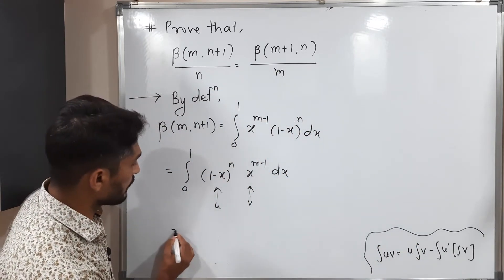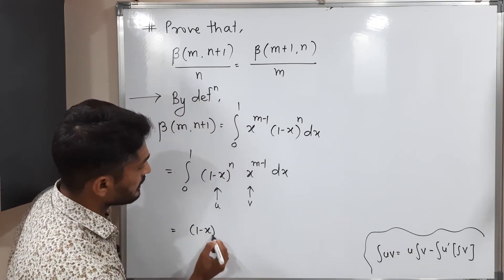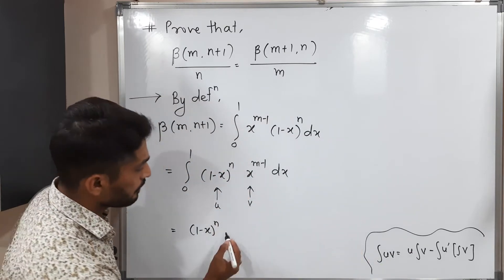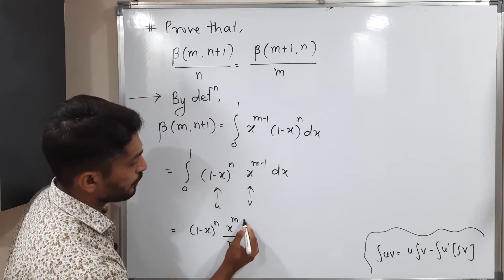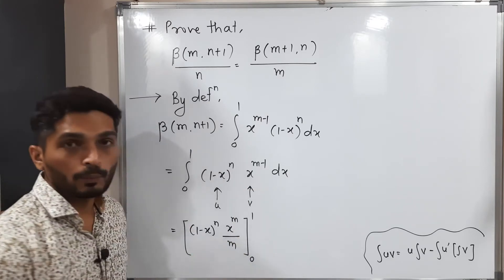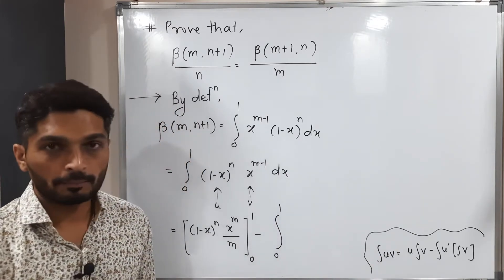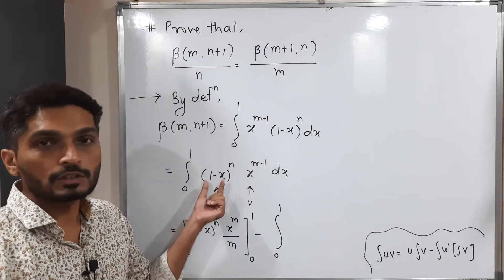So this is equal to, what we do? First we write u as it is. That means 1 minus x raised to n times integration of v. What is this integration? x raised to m upon m. This is integration of v. So your first part is over, having limit 0 to 1, minus. After that we have one big integration, integration 0 to 1. Here we have to find derivative of u. What is derivative of this u?